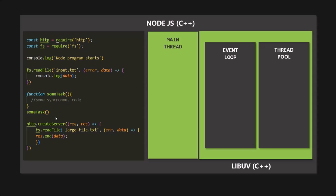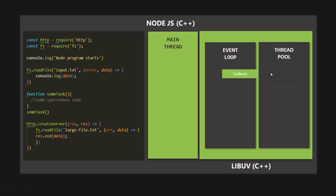All other code which runs asynchronously, like file system functions, is not executed in the main thread. It is executed in the background — and that background is the thread pool. Functions like readFile or createServer which run asynchronously will be executed in the thread pool. With these functions we also have callback functions. When the readFile function finishes reading the input.txt file, its callback function will be pushed to the event loop, where it will wait for its execution.